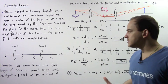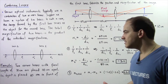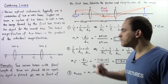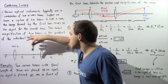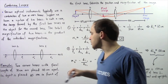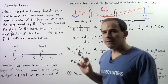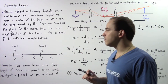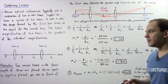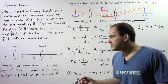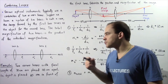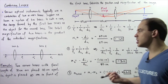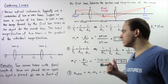Suppose we have a system of two convex lenses, each with a focal length of 30 centimeters, which are placed a distance of 100 centimeters apart. An object is placed 60 centimeters to the left of lens number one. We want to calculate the image distance of the final image produced by these two lenses and the total magnification of our system.